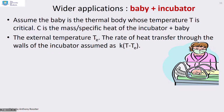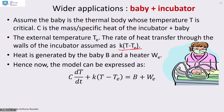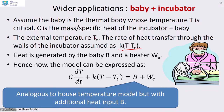Another wider application: a baby in an incubator. We assume the baby and incubator together form the thermal body whose temperature T is critical. C is the combined mass specific heat, Te is the external temperature, and the rate of heat transfer through the incubator walls is k·(T − Te). Heat is generated both by the baby and a heater, so the model becomes almost identical to the house temperature model, with the only difference being an additional plus B term representing heat generated by the baby.